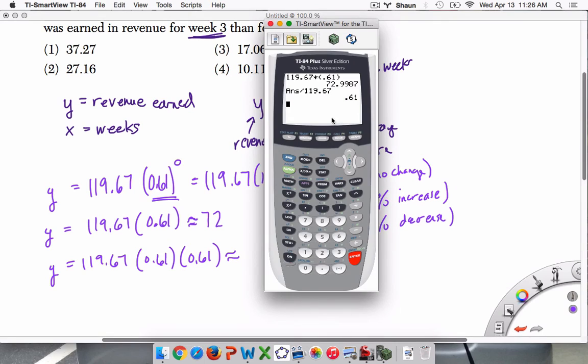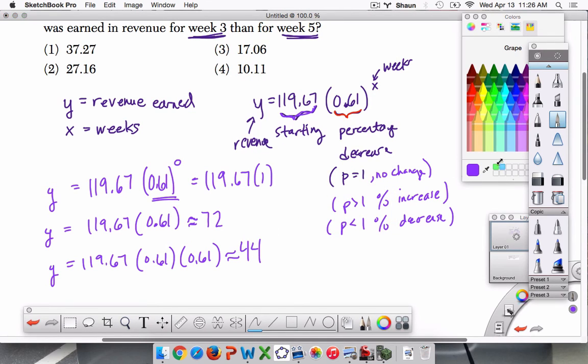So on a calculator, we can just take 72.9987 and multiply it by another 0.61. Or we take the original number and multiply it by 0.61 squared. We have about 44 million. And you see this is happening over and over again.